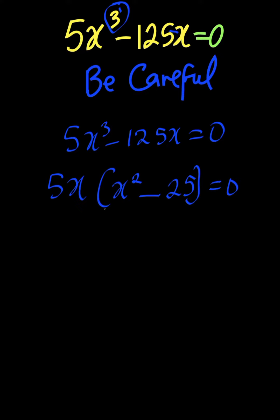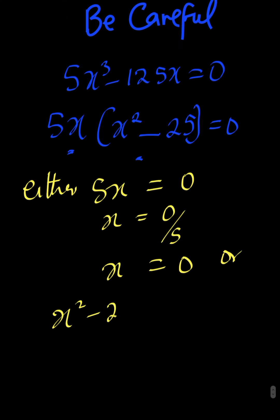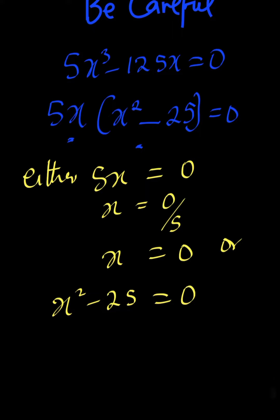Now, when 2 or more terms are multiplying each other to give us 0, you suspect that either one of the terms is 0 or both of them are 0. So what we do here, we write either 5x equals 0, so x equals 0, or x² minus 25 equals 0.